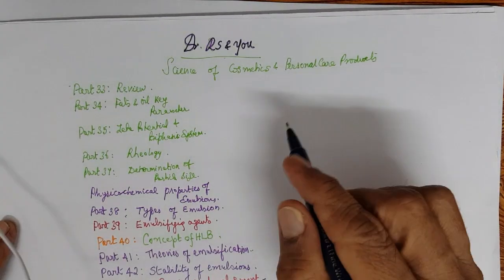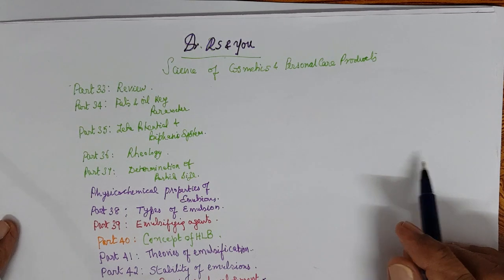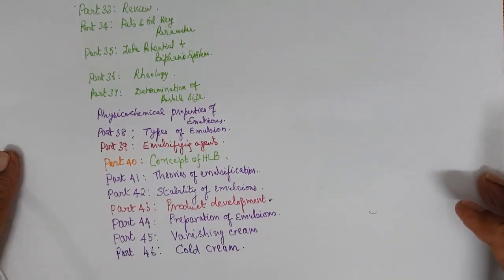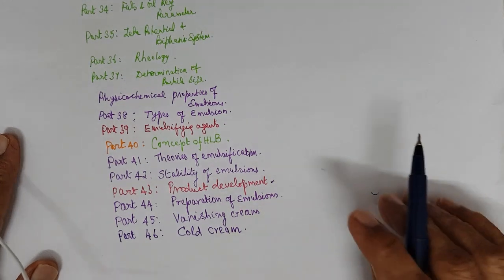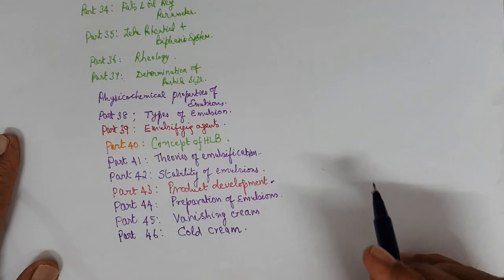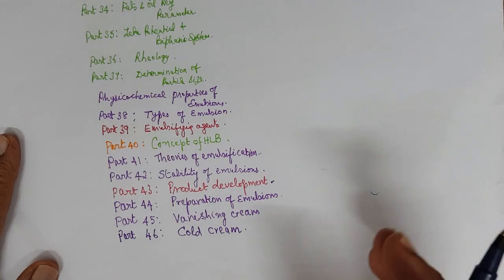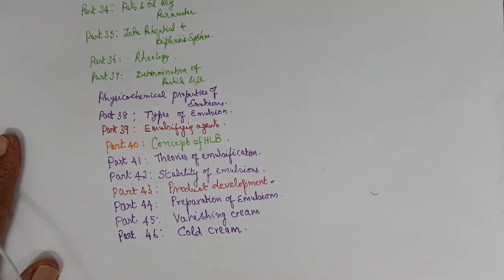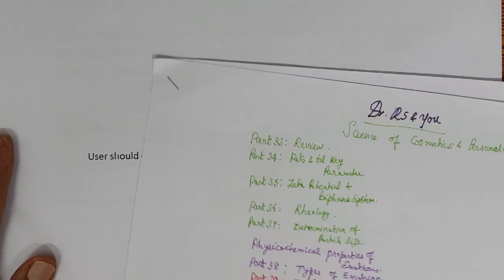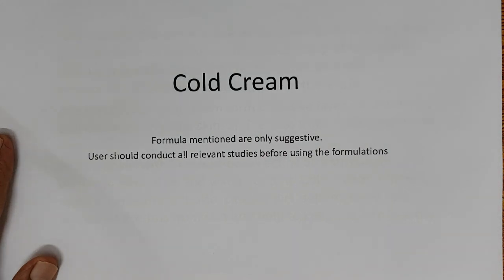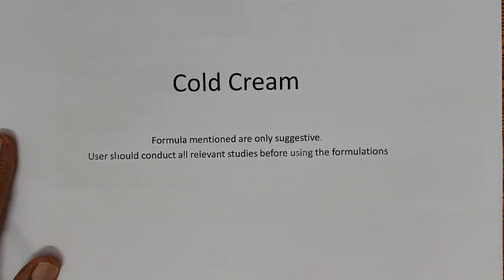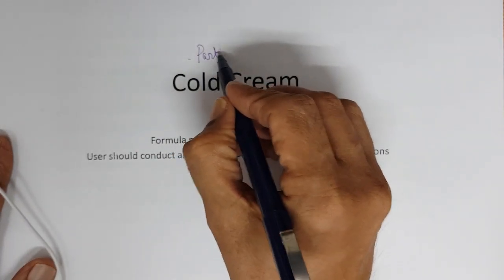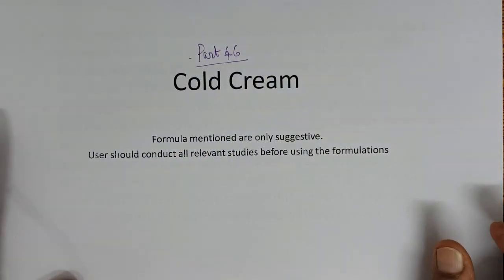Welcome all for another video. Dr. R.S. and the Science of Cosmetics and Personal Care Products. Today we are in part 46 and we will be discussing cold cream, which is exactly opposite to the vanishing cream. Vanishing cream gives a dry, matte feel, and cold cream gives an oily, occlusive feel.